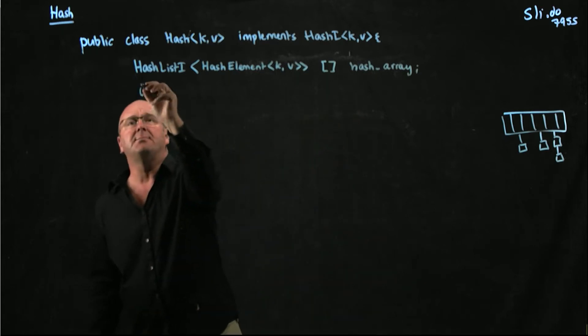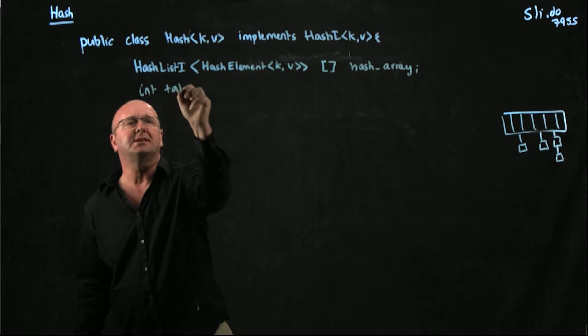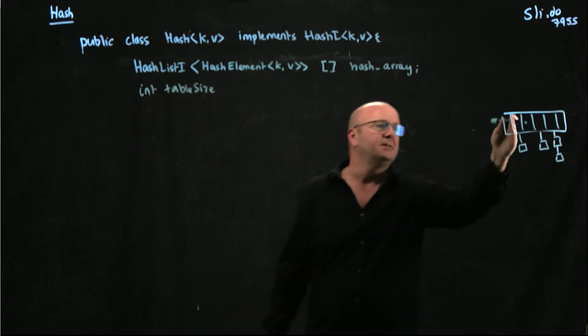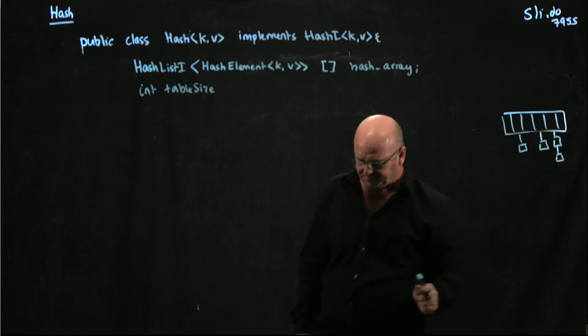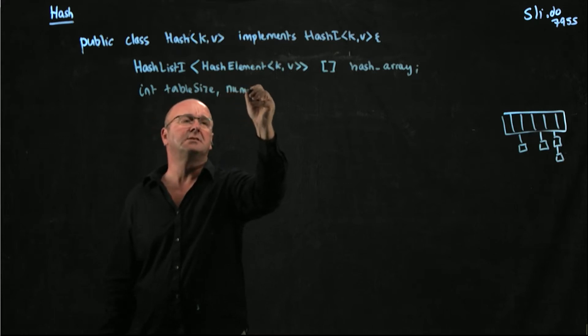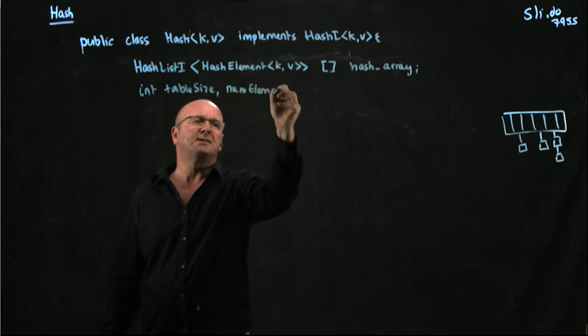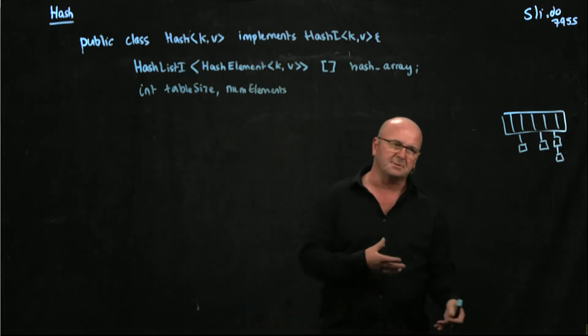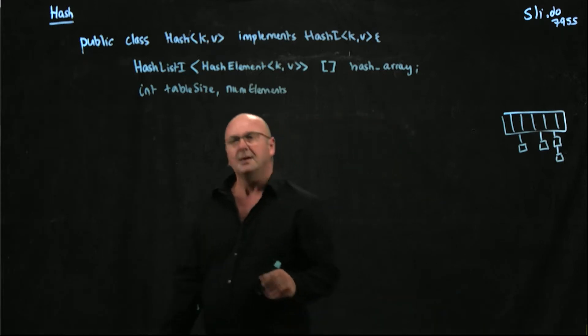We're going to have a couple of integers. We're going to have table size. And table size is the number of buckets we have in our array. And we're going to have num elements, which is basically how many things we have. So when we add something, we increment num elements. When we remove something, we decrement it.